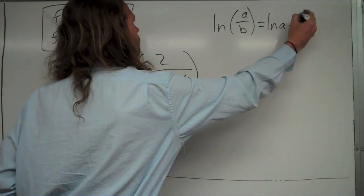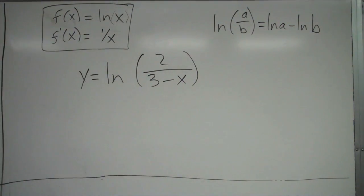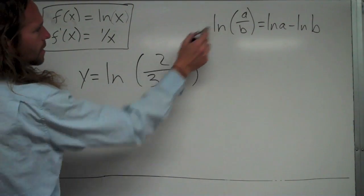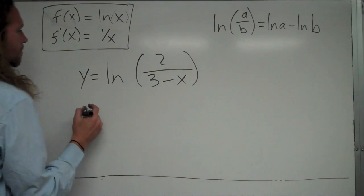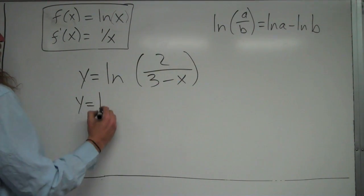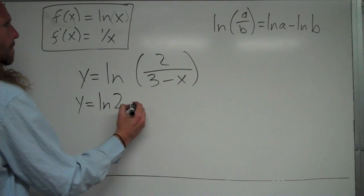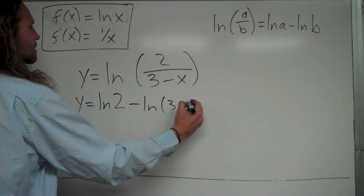So I would prefer to use this rule right here. Natural log of a over b is equal to natural log of a minus natural log of b. And what I could do here is treat, okay well, the top, the 2 is like the a, the 3 minus x is the b. And I could rewrite it like this: natural log of 2 minus natural log of 3 minus x.